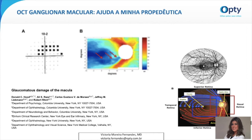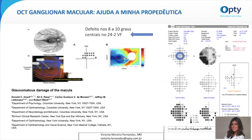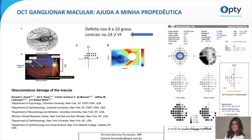O artigo também valida a importância do campo 10-2 e chama atenção para casos em que ainda não se tem alterações na camada de fibras nervosas, mas já se encontram alterações na camada de células ganglionares e plexiforme interna. Como podemos ver no desenho esquemático presente no artigo, vemos o padrão arqueado das fibras, o mesmo padrão encontrado no campo visual. À direita, podemos ver o campo 24-2 com os quatro pontos centrais, correspondentes à região avaliada pelo campo visual macular 10-2 mostrado à esquerda, a título de demonstração.